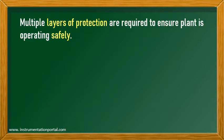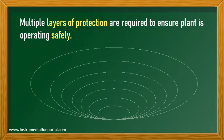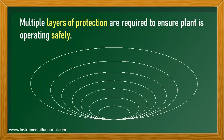In order for oil and gas facilities to operate safely, several protection layers are needed to protect the entire facility. There are seven items that constitute protection layers: process design, basic process control system including process alarms, and operator supervision.